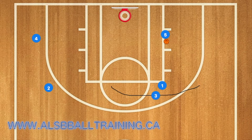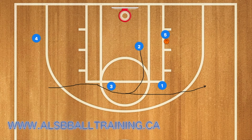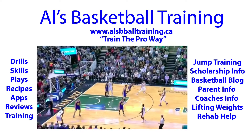Player 1 will then set up a screen at the free throw line and 3 will use that screen, then set a screen for player 2, who could also continue and go out and use 1 as a screen for a 3-point shot. Or if he sees an opening, he can cut between those two players and hopefully have player 5 pass to him for the open layup.